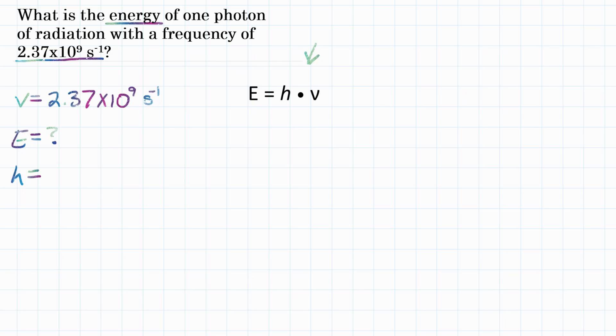Well, Planck's constant is a constant. It is a known value. And it is 6.63 times 10 to the negative 34 joules times seconds.